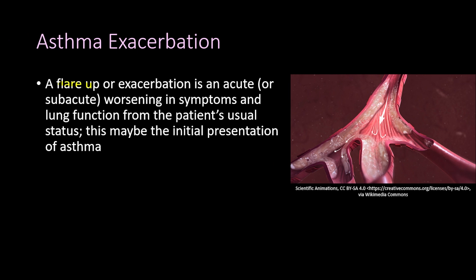Asthma flare-up or exacerbation is an acute or subacute worsening in asthma symptoms and lung function from the patient's usual status. The patient presents with worsening shortness of breath, chest tightness, wheezing, and coughing from their usual status, and this may be the initial presentation of asthma.